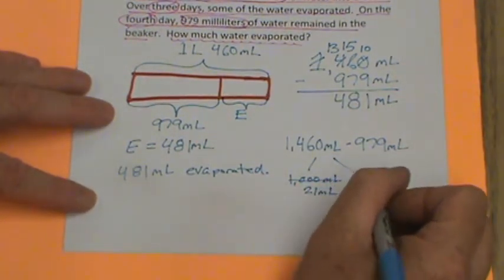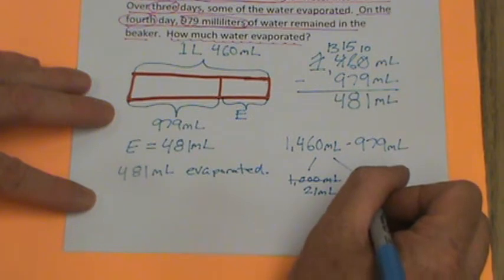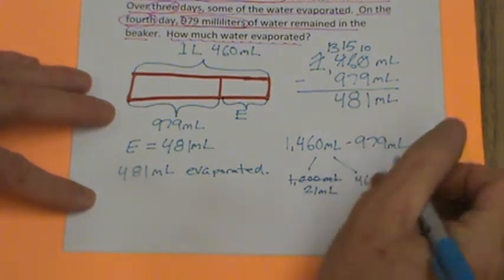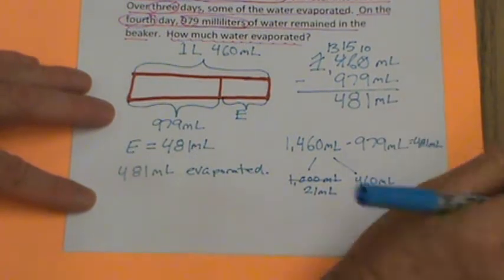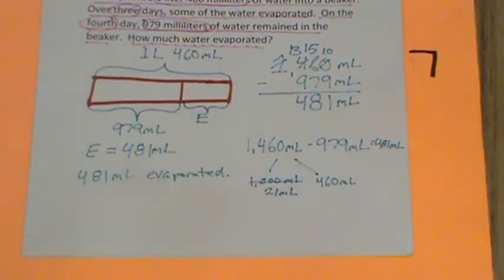Understand how that works? 21 milliliters. Then all we have to do is add these two together, 460, 470, 480, 481. That's if you really got this whole business down. If you don't, that's okay. So let's continue on with our concept development.